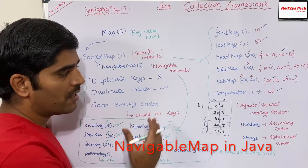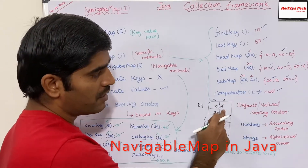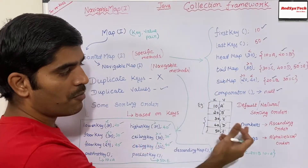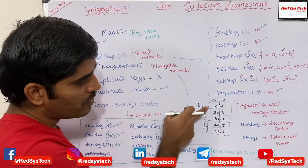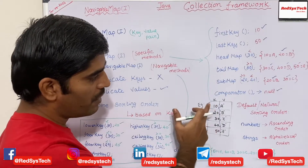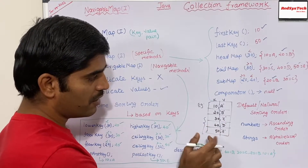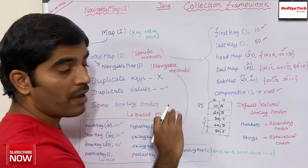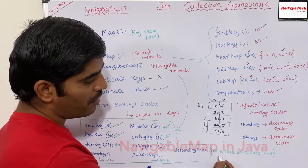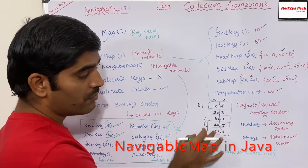If the keys are numbers and the default natural sorting order is used, numbers are sorted in ascending order and strings alphabetically. So with keys 10, 20, 30, 40, 50, they are stored as 10=A, 20=B, 30=C, 40=D, 50=E in ascending order. If you want descending order, there is a method called descendingMap(), which returns 50=E, 40=D, 30=C, 20=B, 10=A — exactly the opposite of the original order.